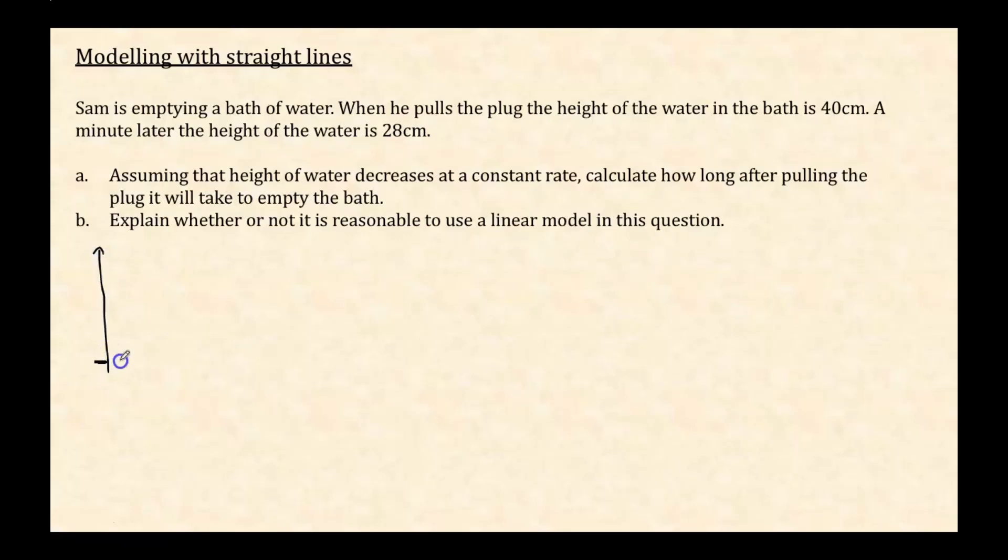So I've got the height of the bath, which I'm going to plot on the y-axis. And then I've got the time, which I'm going to plot on the x-axis. Now, I know that the bath starts with a height of 40 centimeters and then decreases at a constant rate. Now I want to figure out what the time is down here. Because that's when the height of the bath drops down to zero. The height of the water in the bath is now zero.